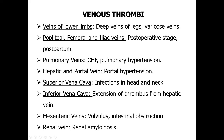Venous thrombi are seen in: veins of the lower limbs — deep veins of the legs, varicose veins, popliteal, femoral, and iliac veins, seen in post-operative stage or postpartum; pulmonary veins in congestive cardiac failure and pulmonary hypertension; hepatic and portal vein in portal hypertension; superior vena cava in infections of the head and neck; inferior vena cava in extension of thrombus from hepatic vein; mesenteric veins in volvulus and intestinal obstruction; and renal vein in renal amyloidosis.